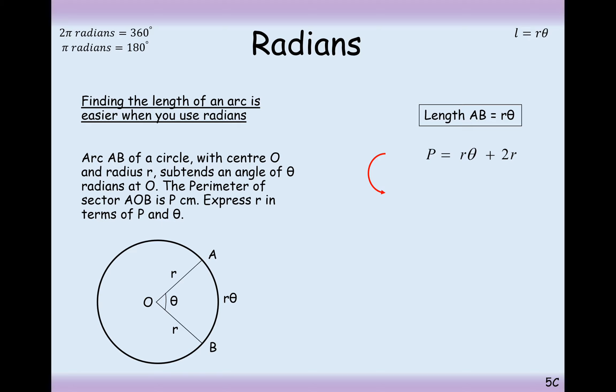Now let's rearrange this and express R in terms of P and theta. Factorise out R divided by theta plus 2. And P over theta plus 2 is equal to R.